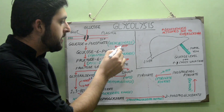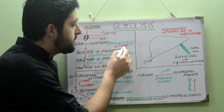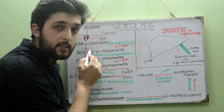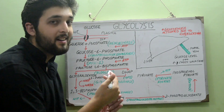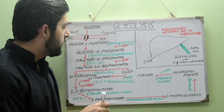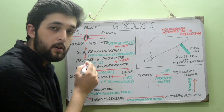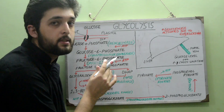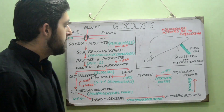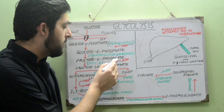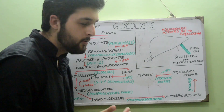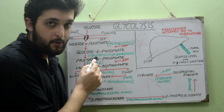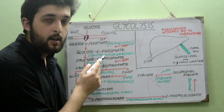Using ATP and hexokinase, glucose is converted to glucose-6-phosphate. This glucose-6-phosphate is then converted to fructose-6-phosphate by the enzyme phosphoglucose isomerase.